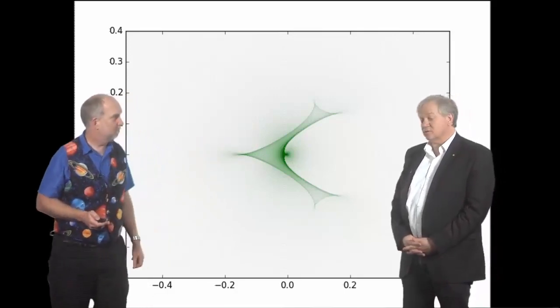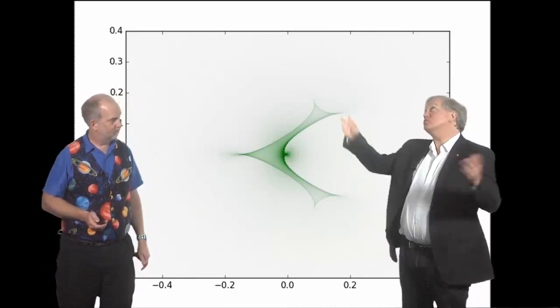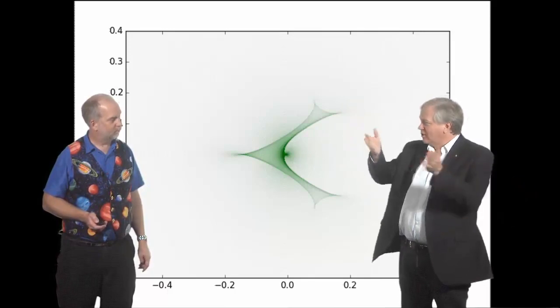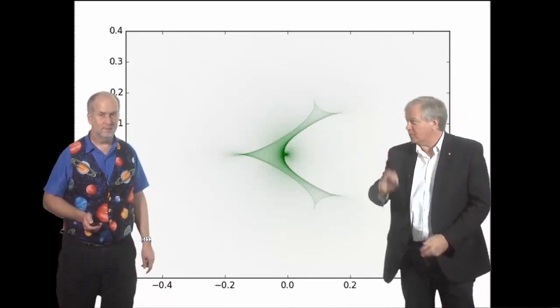It essentially means that you know that's where the light of the object you're looking at adds up where instead of shining out to the entire part of the universe it all gets directed towards you when it passes through that little part of space.